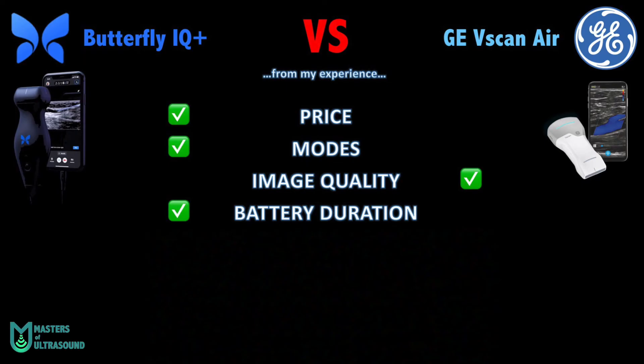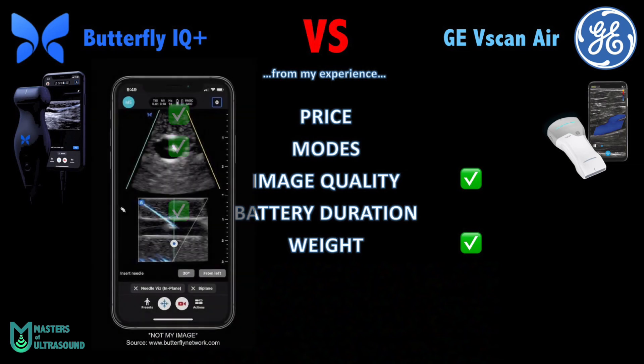If image quality is relevant for your use case, the Vscan Air may be the better choice. On battery, the Butterfly IQ has better battery duration in both exam time and total battery life, although the Vscan can recharge fully in under an hour while the Butterfly IQ lasts two to three hours. On weight, the Vscan Air wins — it weighs two-thirds of the Butterfly IQ and is easier to carry. It is also wireless with a smaller footprint, which may be useful for interventional procedures.